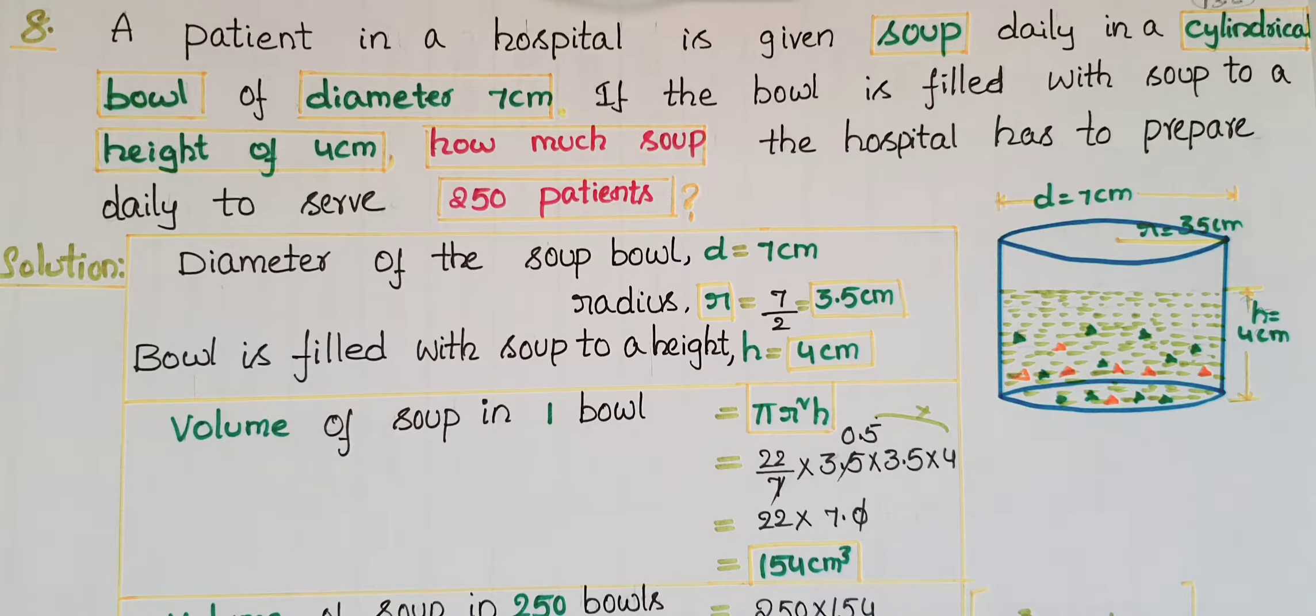Hello everyone, today I am going to tell the solution of a problem from Exercise 13.6 from Surface Areas and Volumes from NCERT Class 9. A patient in a hospital is given soup daily in a cylindrical bowl of diameter 7 centimeters. If the bowl is filled with soup to a height of 4 centimeters, how much soup the hospital has to prepare daily to serve 250 patients?